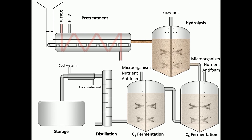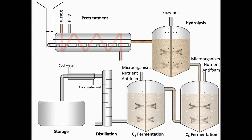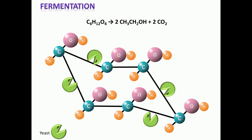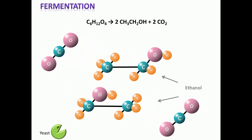Together with microorganisms, nutrients, and antifoam, the glucose is delivered into the fermentation reactor. 5-carbon and 6-carbon sugars can be fermented separately. Here we only present the fermentation of 6-carbon sugar. The 6-carbon sugar fermentation converts 1 mole of glucose into 2 moles of ethanol and 2 moles of carbon dioxide in the presence of yeast.